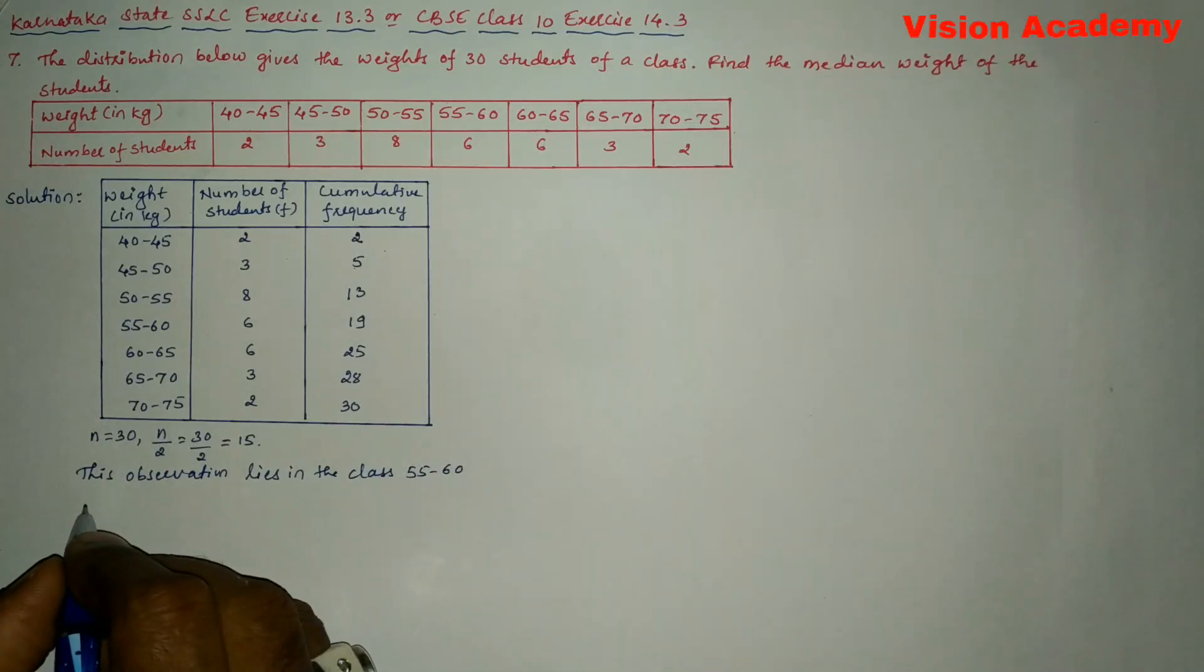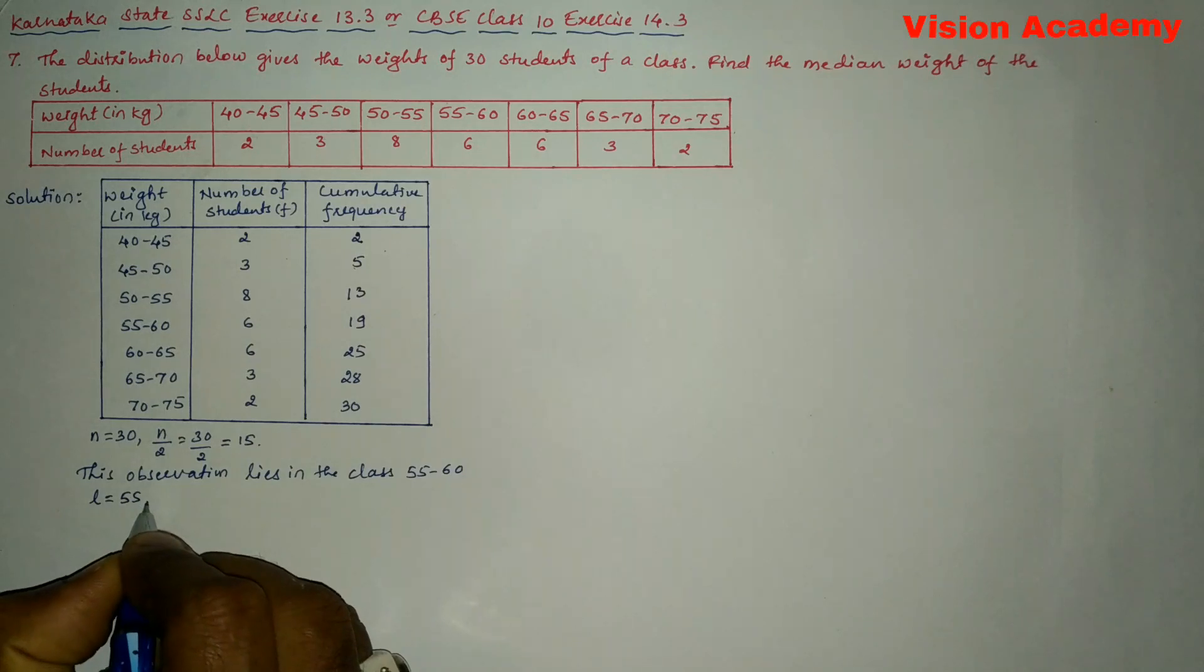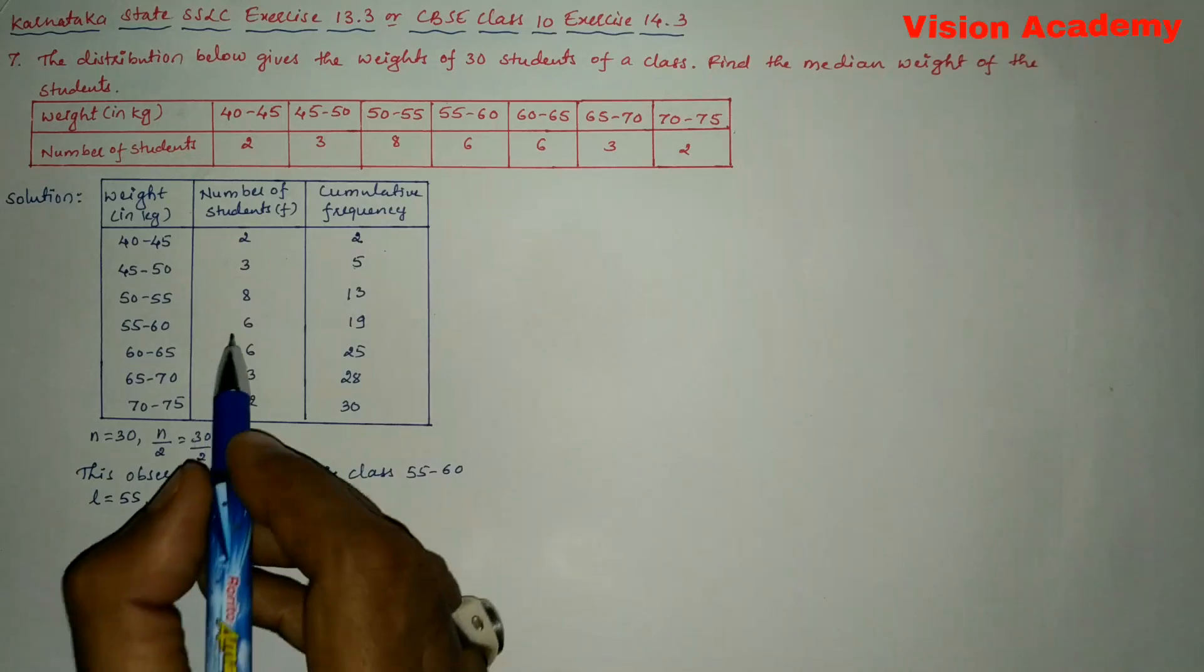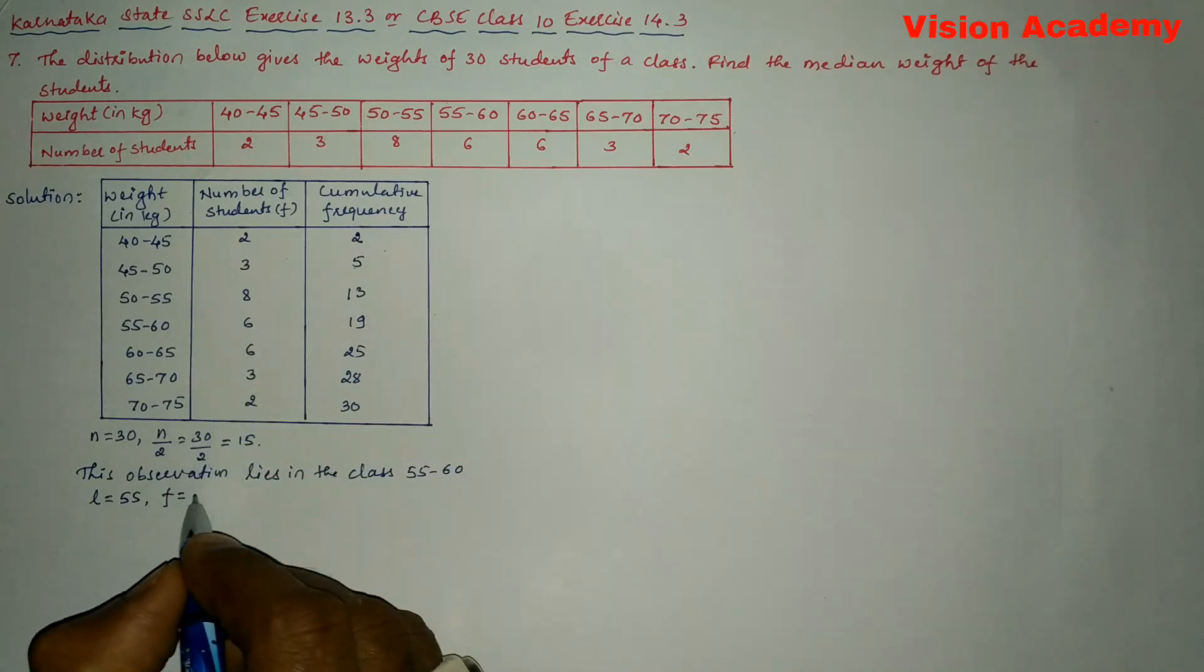Next here we will write lower limit of the modal class l equals, you can see here it is 55. So let us write l equals 55. Next we will write frequency of the class. So frequency of the class is 6.